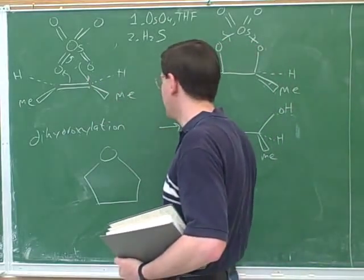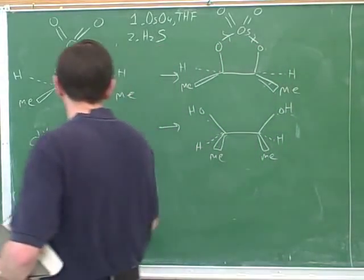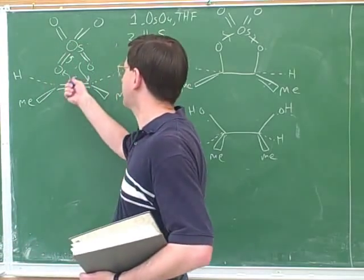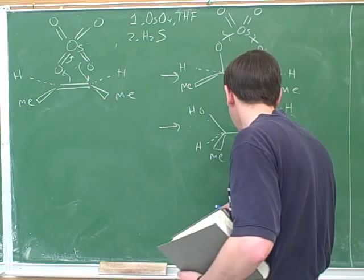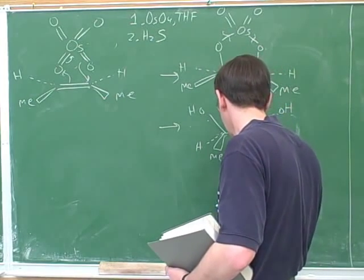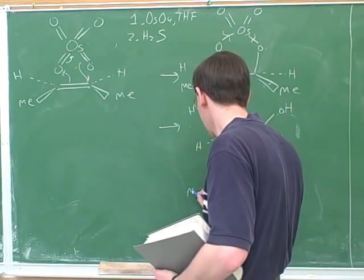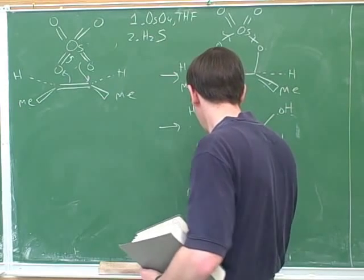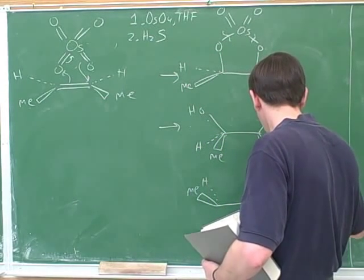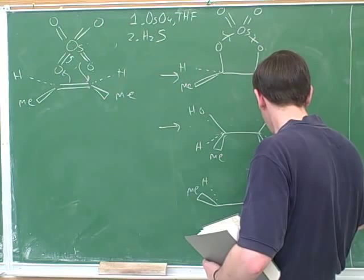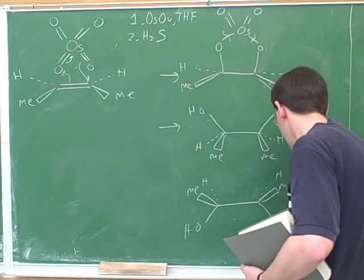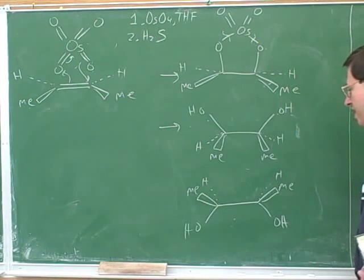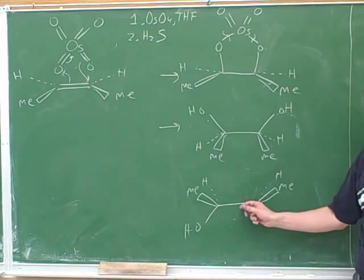Now, since we're attacking something trigonal planar, there's a possibility of two different products. Because instead of attacking from above, the osmium tetroxide could have attacked from below. If the osmium tetroxide had attacked from below, this would have been our product.